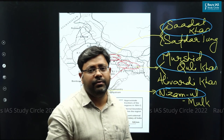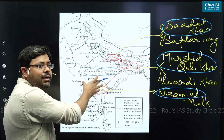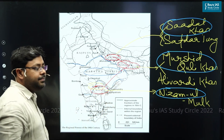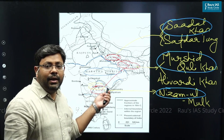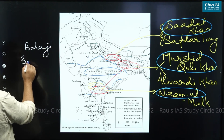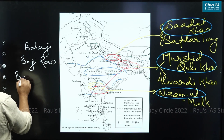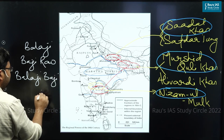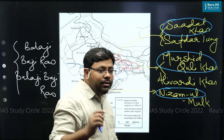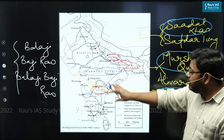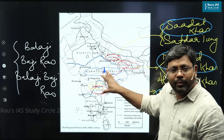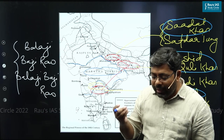A very prominent regional power in the 18th century were the Marathas. When you see the location of the Maratha territory, it comprised a big part of Central and Deccan India. The Marathas were constantly on the rise in the 18th century under the leadership of three great Peshwas: first was Balaji, second was Bajirao, and third was Balaji Bajirao. These three great Peshwas gave a massive rise to the influence of the Marathas in the 18th century, covering a big part of Central and Deccan India.